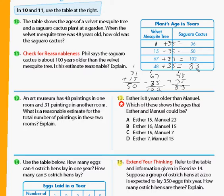The next question, question number 11: Phil says that the cactus is about 100 years older than the velvet mesquite tree. Is the estimate reasonable? Explain. And we already know that it's 35 years older, so it's not really close. So we can say no on that one. No, it is not.